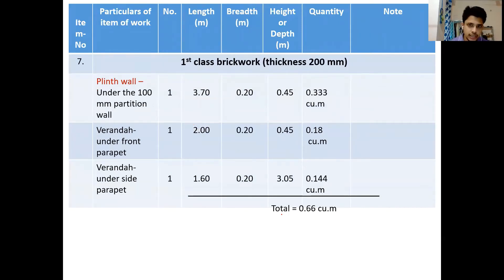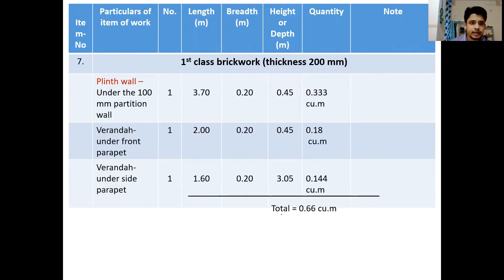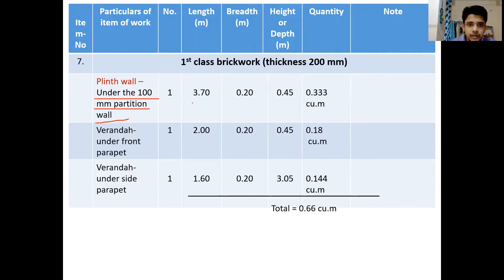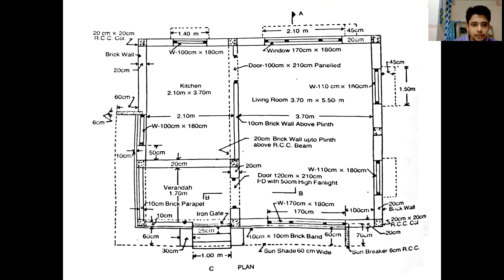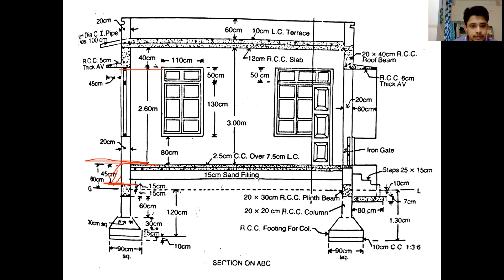At certain locations there are 100 mm walls, but at those locations the plinth wall is still 200 mm thick, so that portion must be added under the 200 mm section. Under the 100 mm partition wall heading we record the 200 mm thick plinth wall. The length and thickness are the same, but the depth changes to 0.45 m as shown in the diagram.